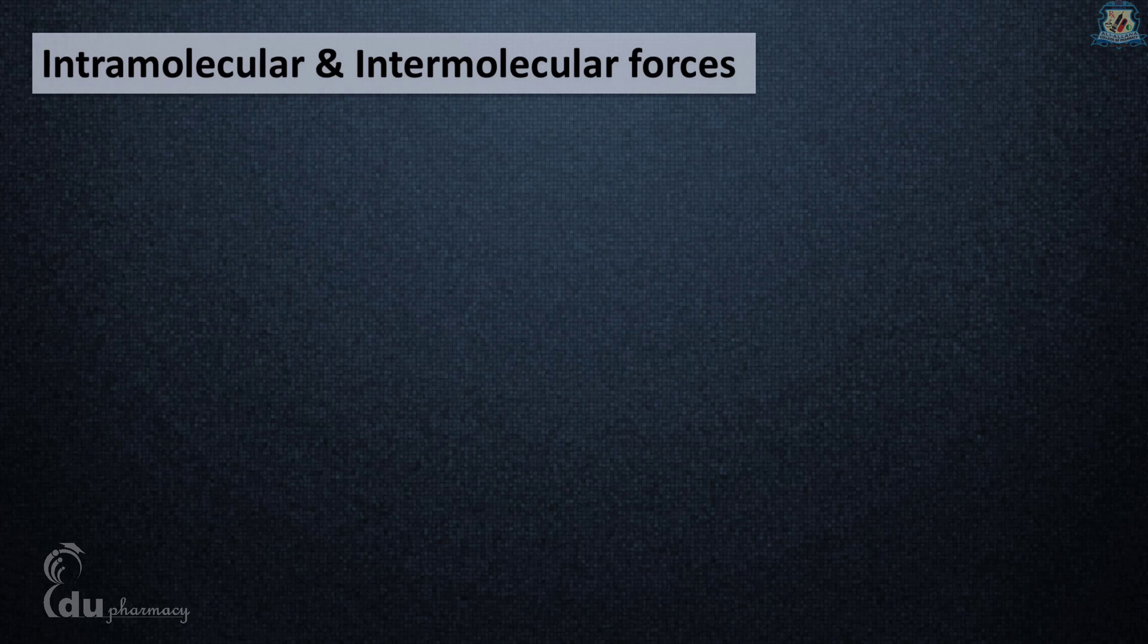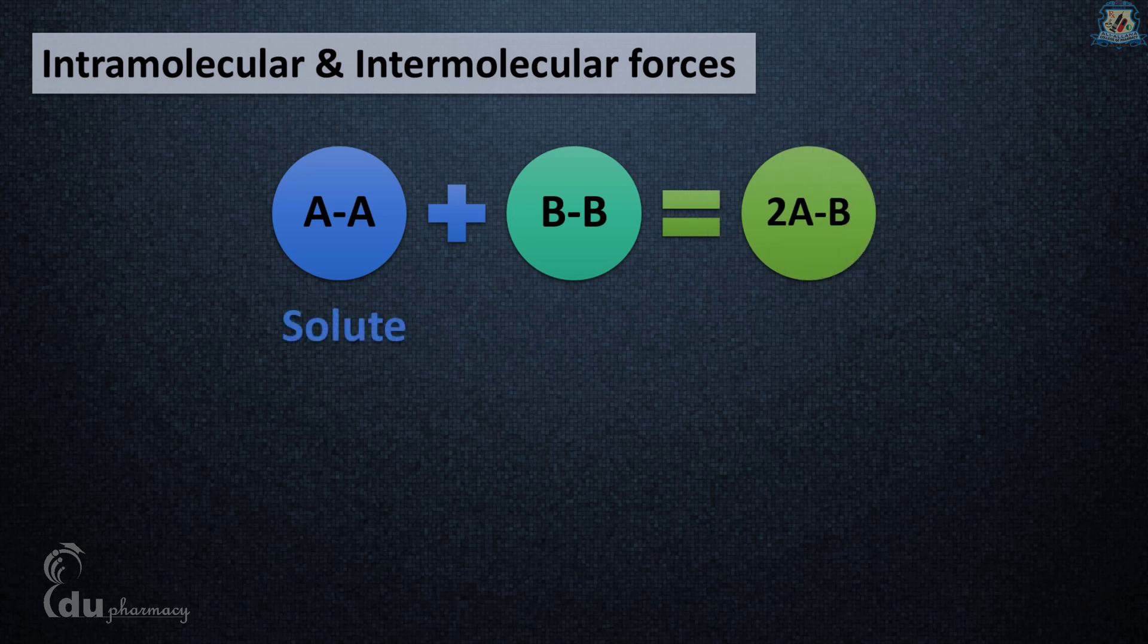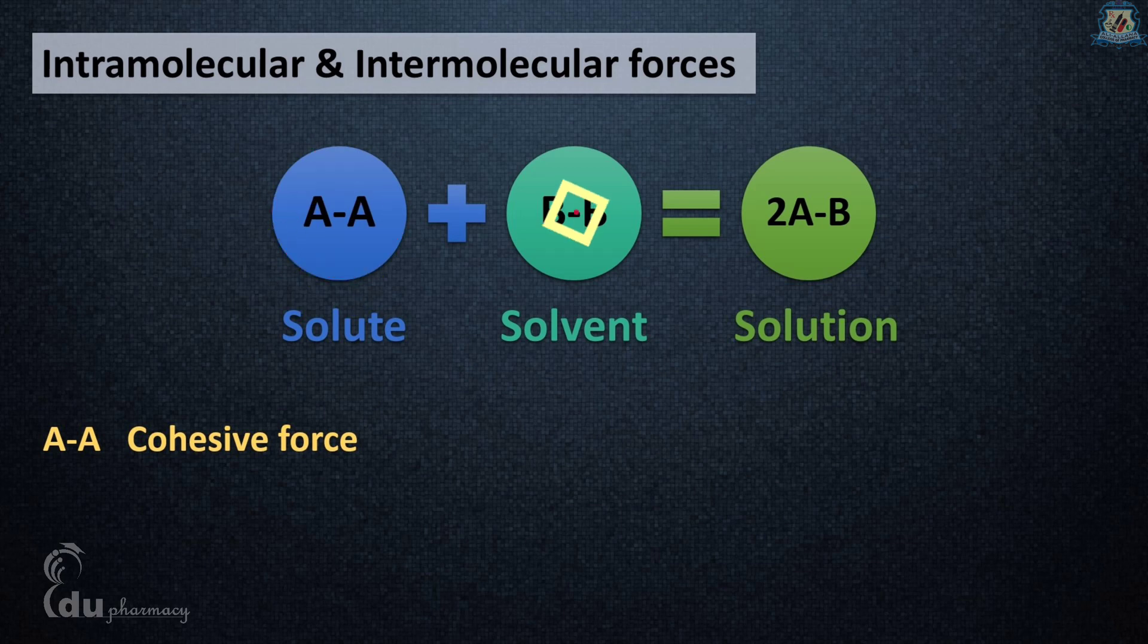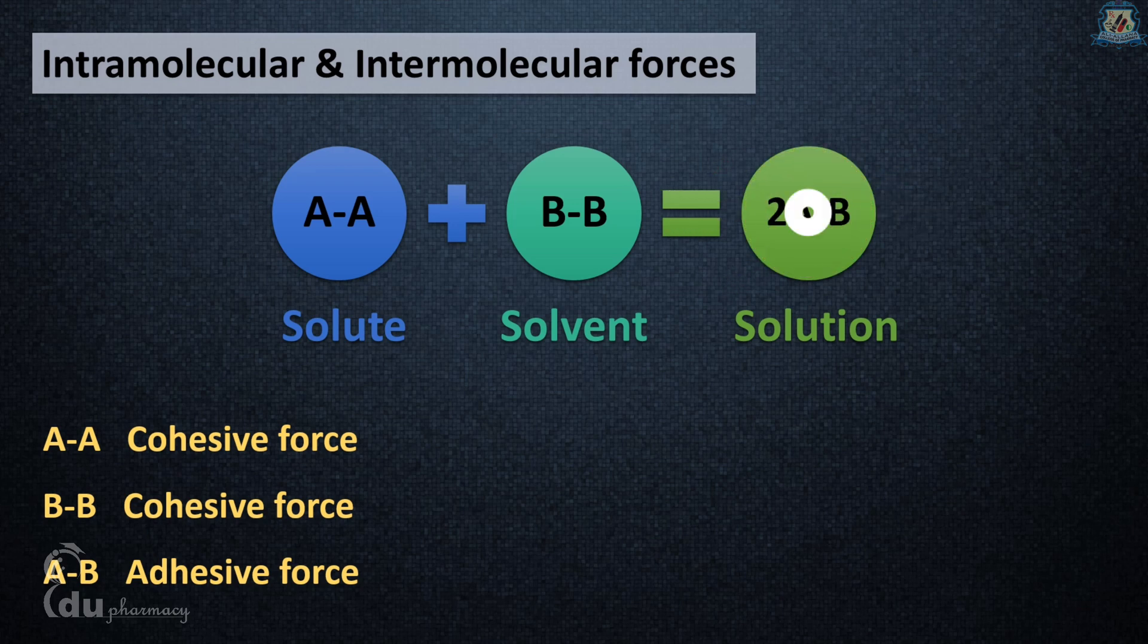Consider the forces of attraction between solute and solvent molecules. If solute is A and solvent is B, the forces are represented by AA, BB, and AB. AA is the intramolecular force of attraction of solute, a cohesive force between like molecules. BB is intramolecular force of solvent, also cohesive. AB is intermolecular force between solute and solvent, an adhesive force between unlike molecules.